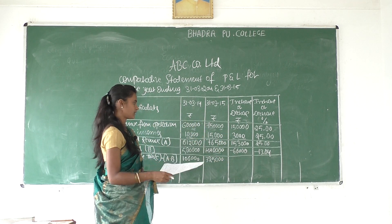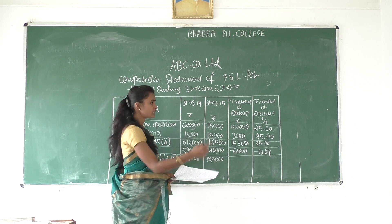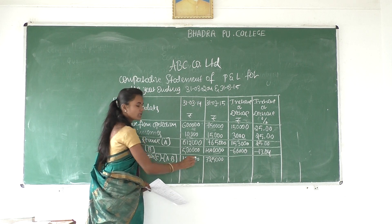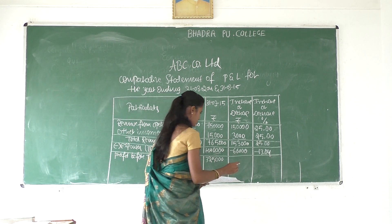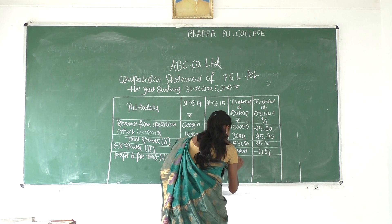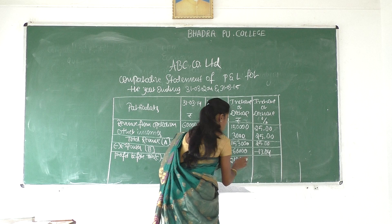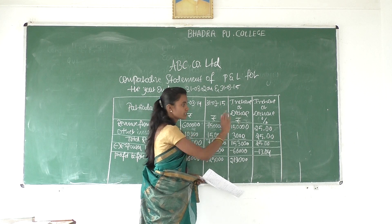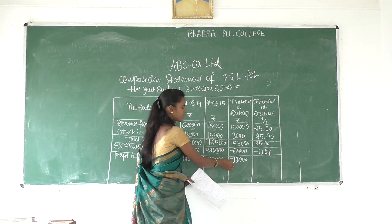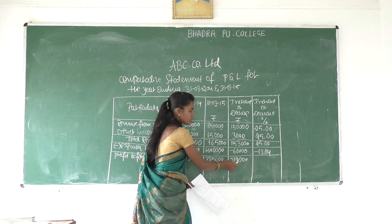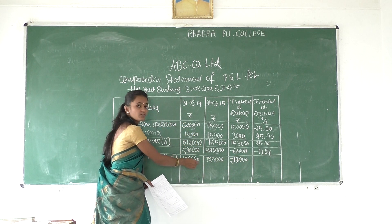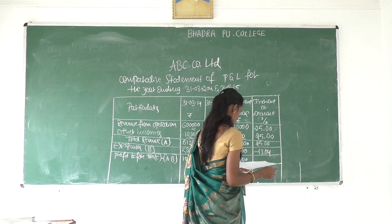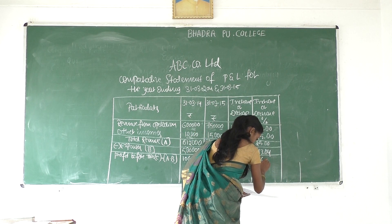3,25,000. We need to calculate increase or decrease in rupees: 3,25,000 minus 1,6,000 — how much? It is 2,19,000 rupees. Finally, we have to calculate increase or decrease in percentage: 2,19,000 divided by the first year value 1,6,000 into 100. The percentage is 206.60.